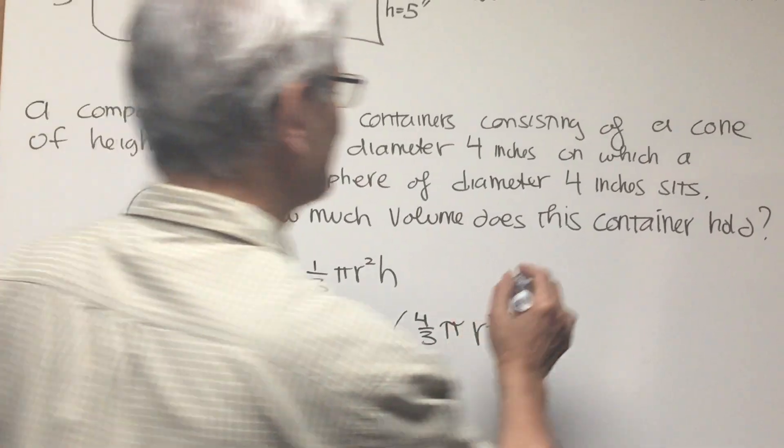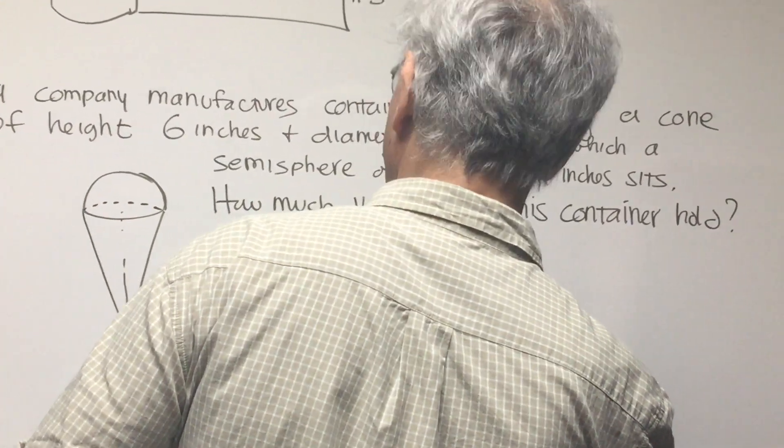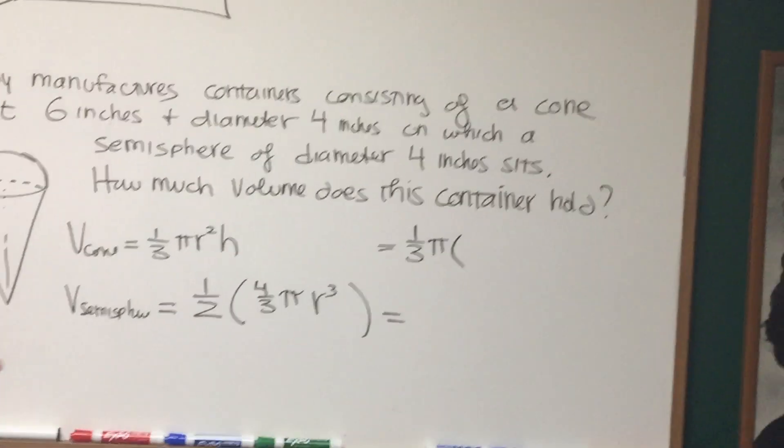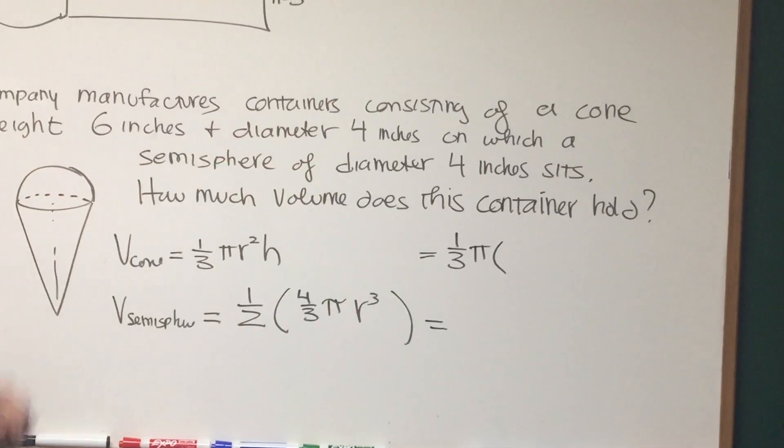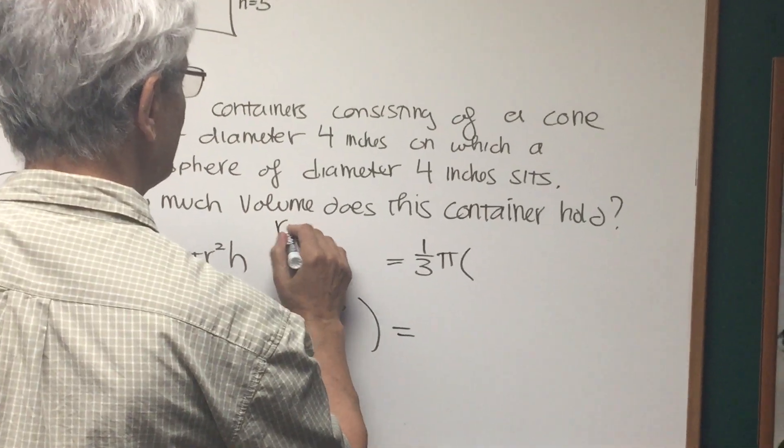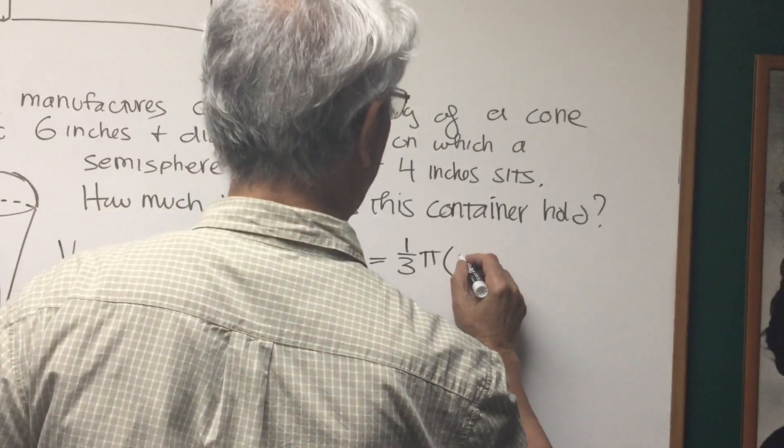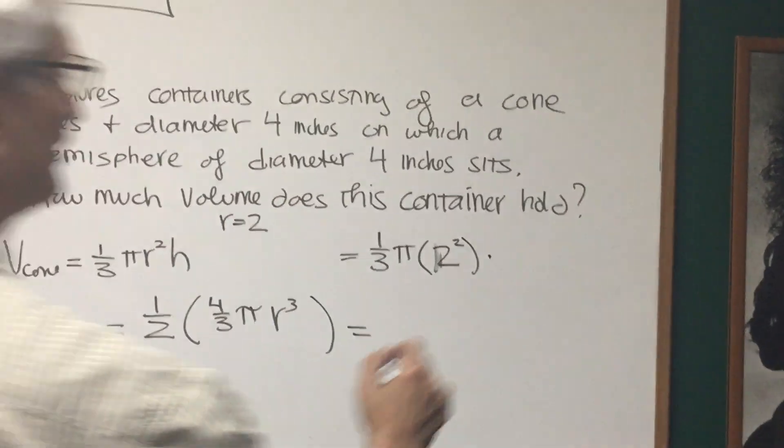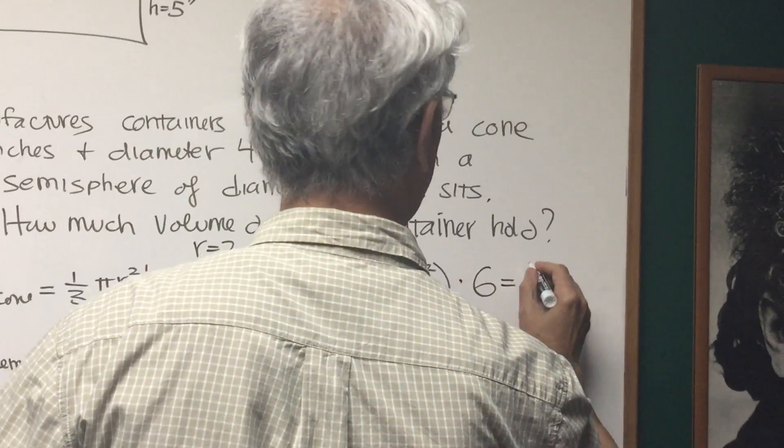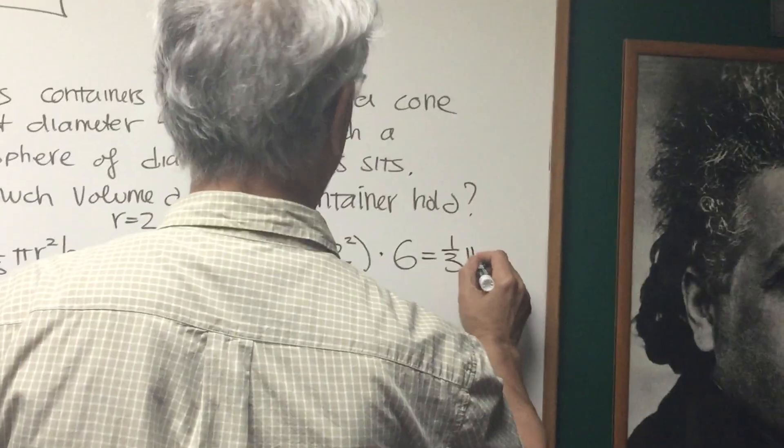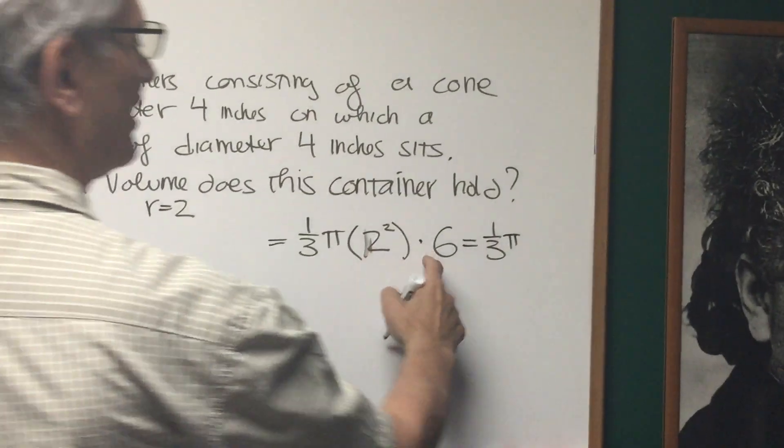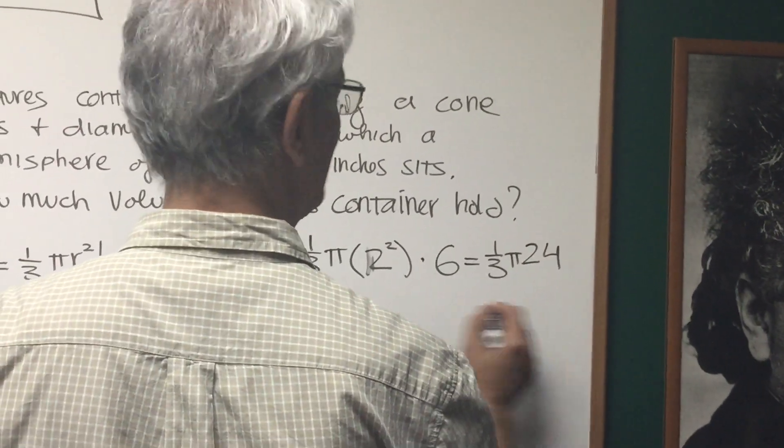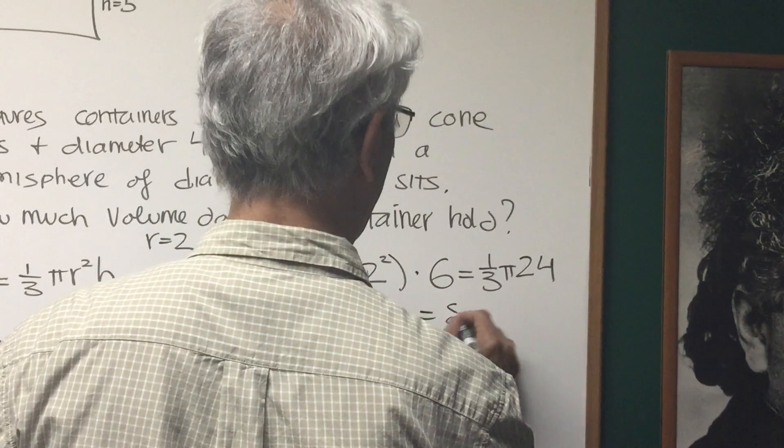So therefore all we have to do is fill in the details. What's the volume of the cone? It's one-third π times its radius squared. Well we know its diameter is 4 inches, so I know the radius is equal to 2. So it's one-third times 2 squared times the height, which is 6 inches. Okay, and that's going to be one-third times π times 4 times 6 is 24. So that's going to be equal to 8π. That's equal to 8π. I'll put that over here.